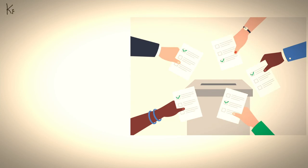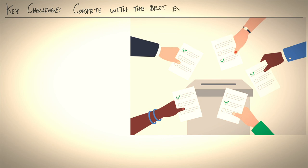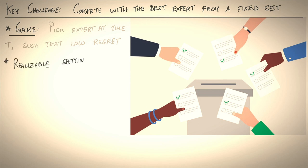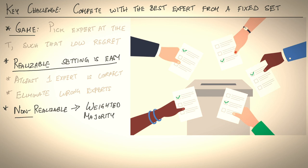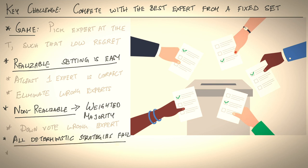Okay, so with that, we are at an end. Let's recap the key challenges. Our overall goal was to compete with the best expert from a fixed set of experts. So we defined a game called prediction with expert advice, where every round of the game, we had experts making predictions. And our goal was to pick an expert at time t, such that you do as well as the best expert in hindsight. In other words, you have low regret. We saw that in the realizable setting, there's a very easy solution. At least one expert is always correct. So you play majority rules and eliminate wrong experts. In the non-realizable setting, we generalize this approach to something called weighted majority, where you don't eliminate experts, but you downvote the wrong expert and you take the weighted combination of their votes. We saw the key problem that all deterministic strategies fail. And the only way out is to randomize. And if you do this cleverly, you're able to achieve no regret.